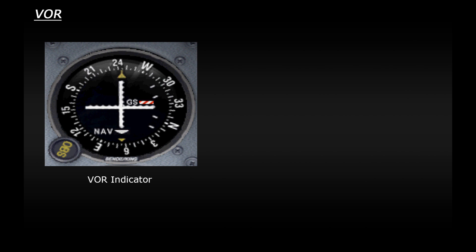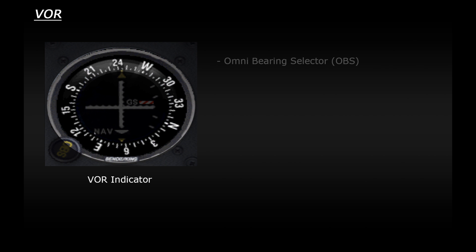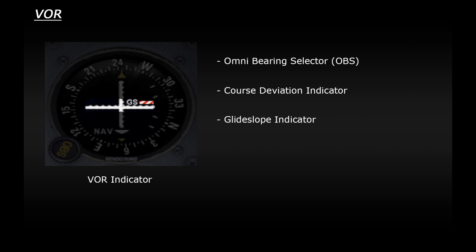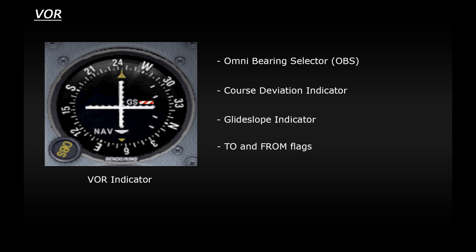The instrument we use with VOR navigation is the VOR indicator, also called a course deviation indicator or CDI for short. It has several components. Around the outside we have a rotating compass called an omni-bearing selector, or OBS for short. In the middle we have two needles: the vertical line shows our deviation — how far off our intended flight path we are — and the horizontal one is used for landing. You will also see two little arrows at the bottom which point up or down; these are your to and from flags, indicating whether we're flying to or away from the VOR station.